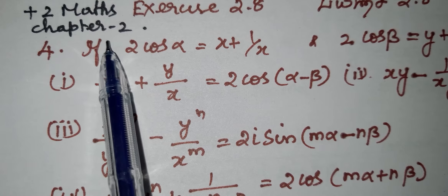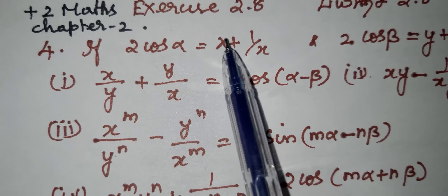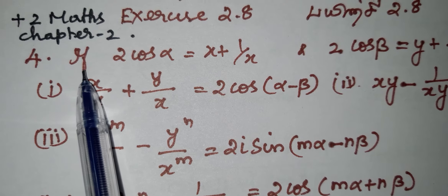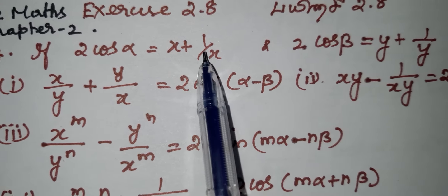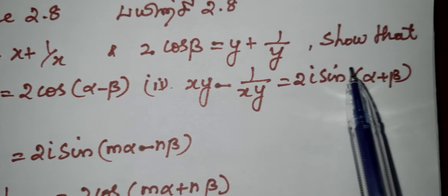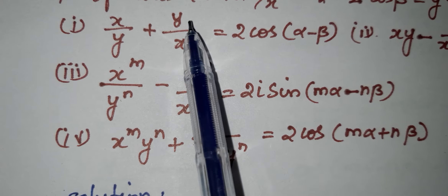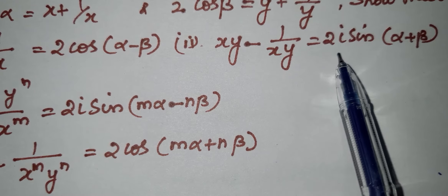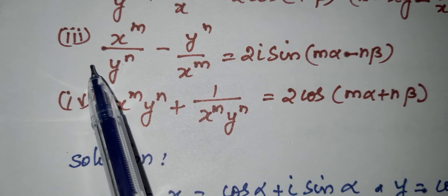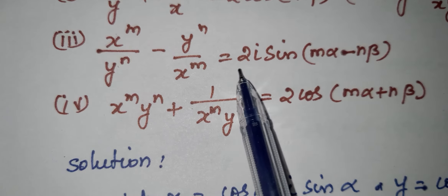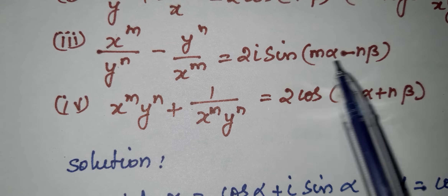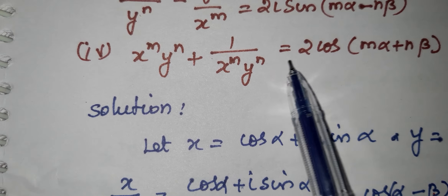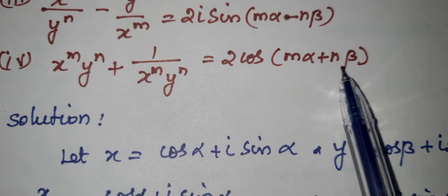Dear Students. Plus 2 Maths Chapter 2, Complex Numbers — problem number 2.85, question 8, 4th sum. If 2 cos alpha equals x plus 1 by x, and 2 cos beta equals y plus 1 by y, show that: 1st: x/y + y/x = 2cos(α−β); 2nd: xy − 1/xy = 2i·sin(α+β); 3rd: xᴹ/yᴺ − yᴺ/xᴹ = 2i·sin(Mα−Nβ); 4th: xᴹ·yᴺ + 1/(xᴹ·yᴺ) = 2cos(Mα+Nβ).